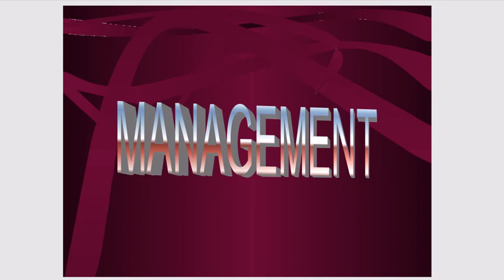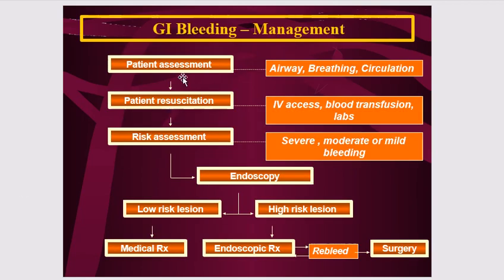Management of GI bleeding: assess the patient using airway, breathing, and circulation. Resuscitate the patient, establish IV access, consider blood transfusion, perform lab tests, and carry out risk assessment — classifying as severe, moderate, or mild. Then proceed to endoscopy. For low-risk lesions, medical treatment suffices; for high-risk lesions, endoscopic treatment is indicated. If re-bleeding occurs, consider surgery.